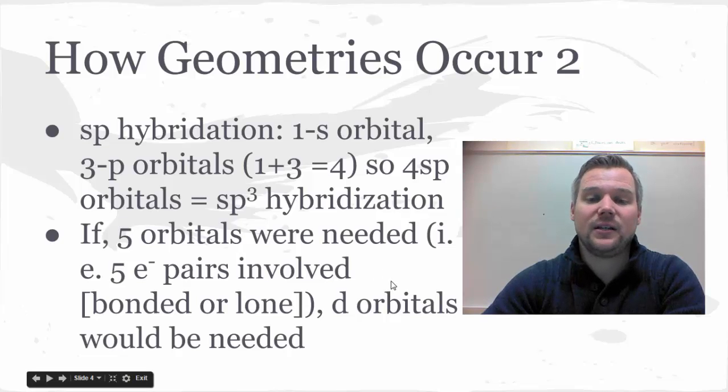Recall that central atoms that live in the third energy level or lower, so energy level three or row three on our periodic table or lower, can break that octet rule. That's what we're talking about here. We would have a fifth orbital get added in order to increase bond angles.